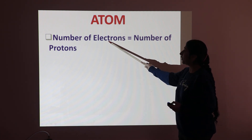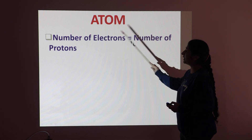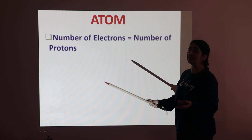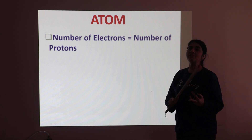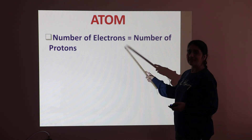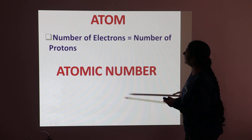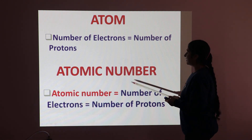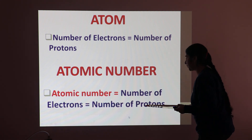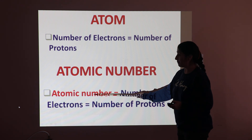Due to electrons, the atom carries negative charge, and due to protons, the atom carries positive charge. Since the atom is neutral, the net positive charge is equal to the net negative charge. So the atomic number means the number of electrons is equal to the number of protons.